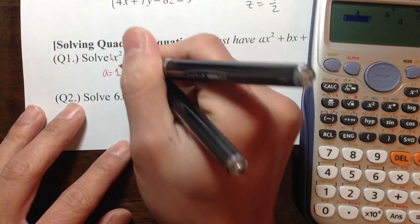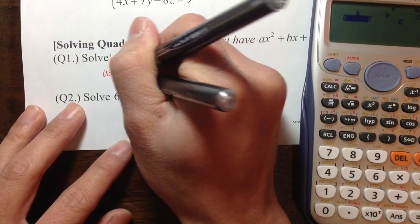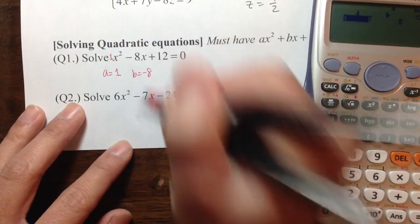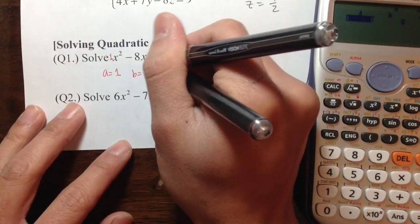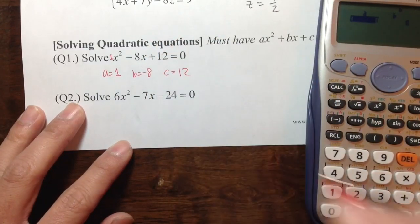The number in front of the x, just an x right here, is -8. So that's the value for b: b = -8. c is the number that has no x, so c = 12.